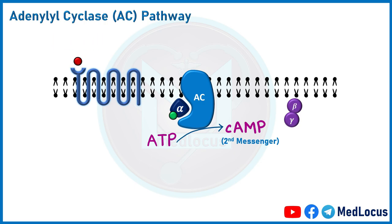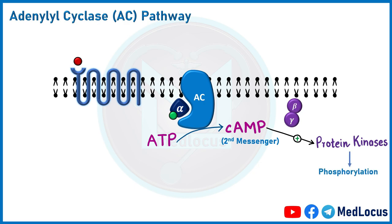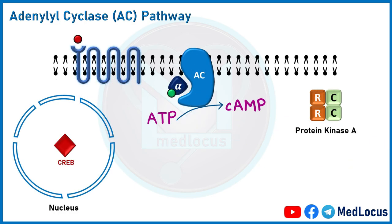Second messengers are usually intracellular in nature, because the first message for signaling in the cell came from the ligand, which we term the first messenger — usually extracellular. These extracellular first messengers bind to GPCRs. Similarly, the second message is transferred to downstream proteins by cAMP. For example, cAMP activates cyclic AMP-dependent protein kinases, which phosphorylate other proteins and enzymes according to the agonist molecule.